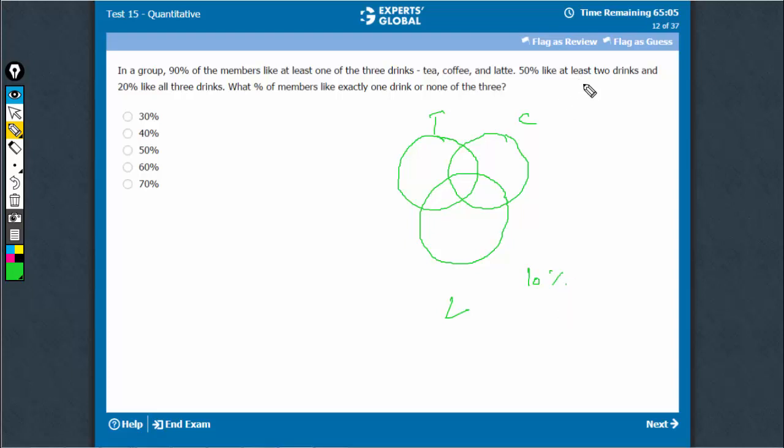50% like at least two drinks and 20% like all three. So if 20% lies here, this entire part is equal to 50.